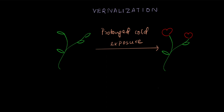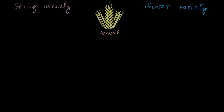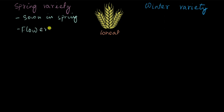This phenomenon often happens in plants which have winter varieties, like wheat. Wheat has two varieties: the spring variety and the winter variety. The spring variety is sown in spring, and it flowers and sets seed — that is, produces seed — in summer or autumn.